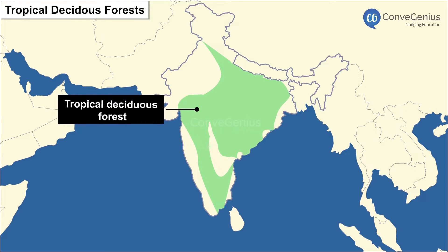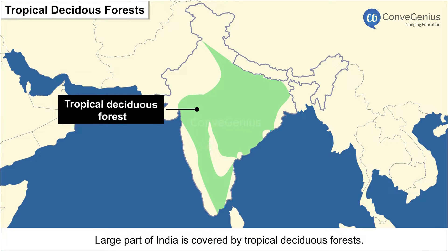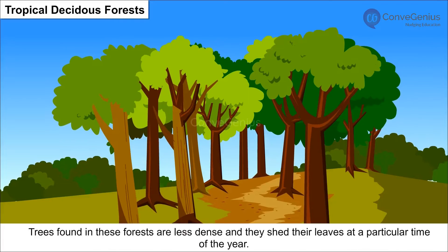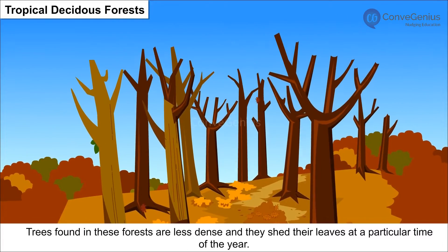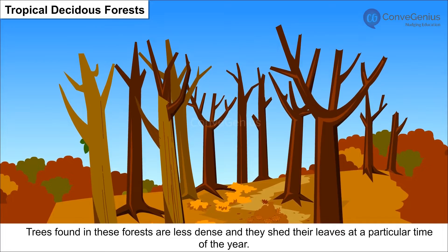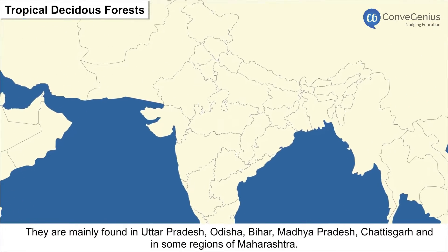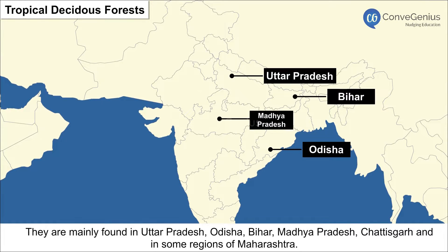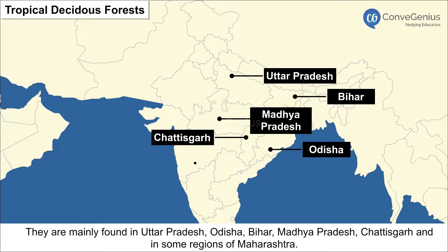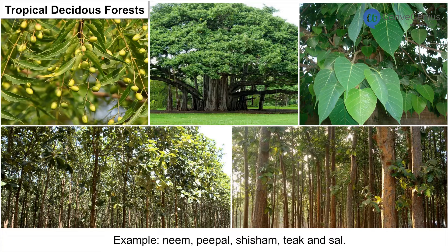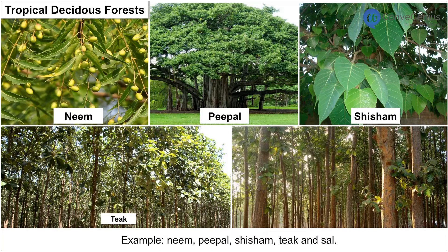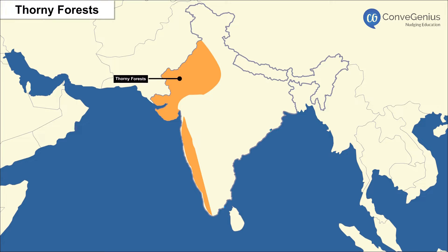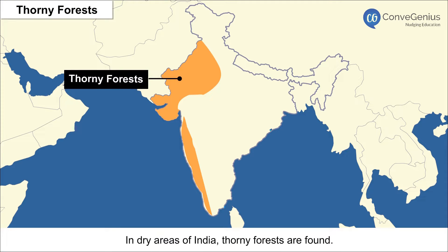Tropical Deciduous Forests cover a large part of India. They are also known as monsoon forests. Trees found in these forests are less dense and they shed their leaves at a particular time of the year. They are mainly found in Uttar Pradesh, Odisha, Bihar, Madhya Pradesh, Chhattisgarh, and in some regions of Maharashtra. Examples include Neem, Peepal, Shisham, Teak, and Sal.